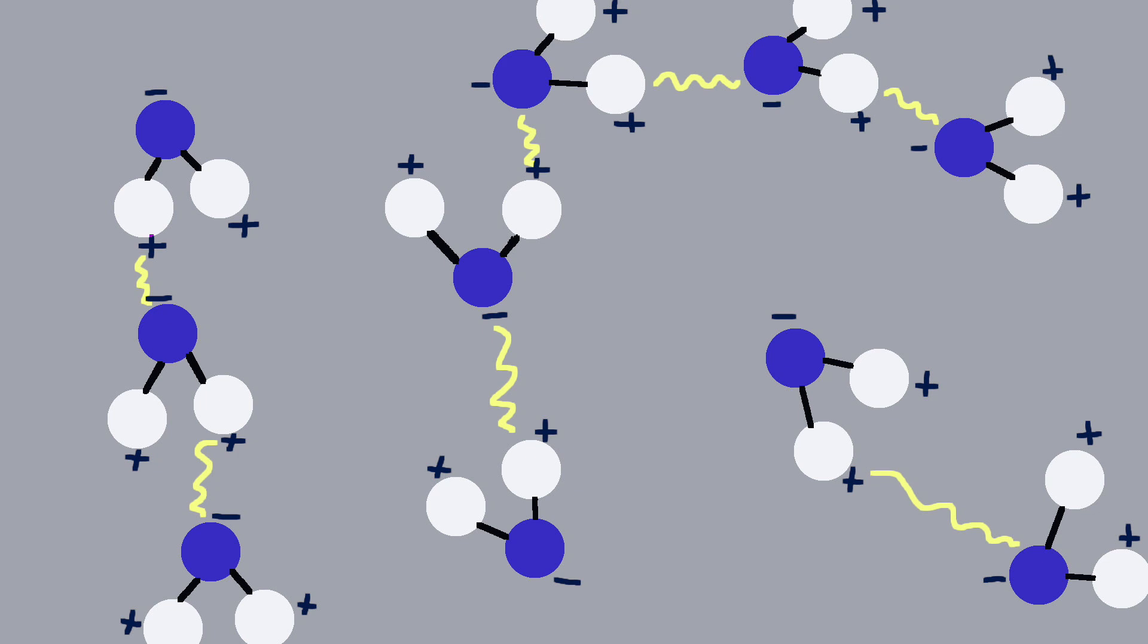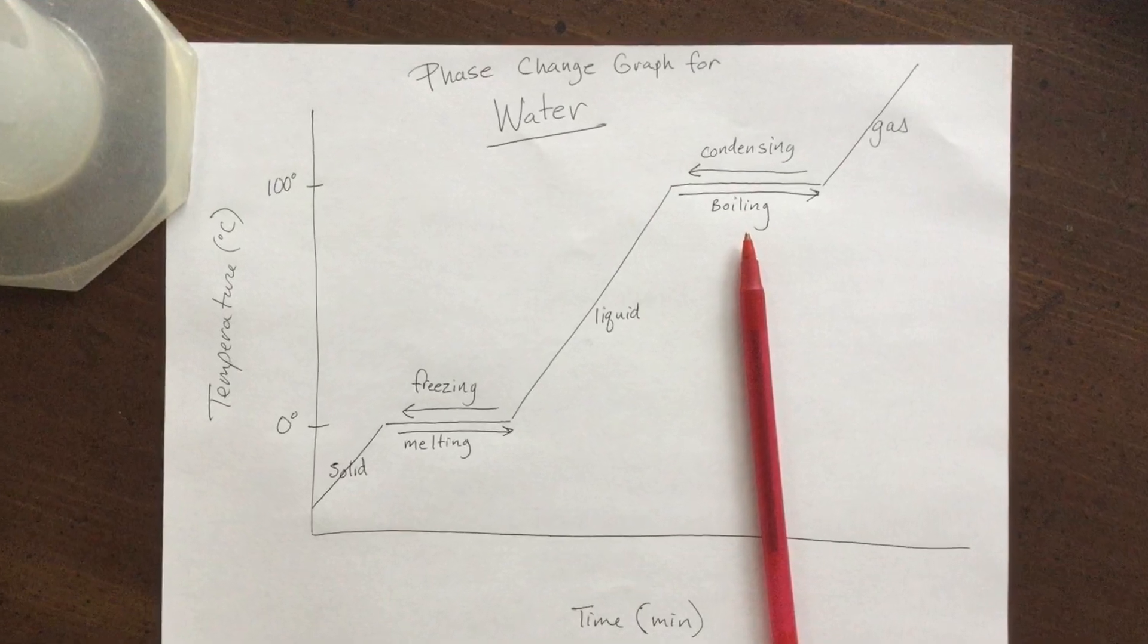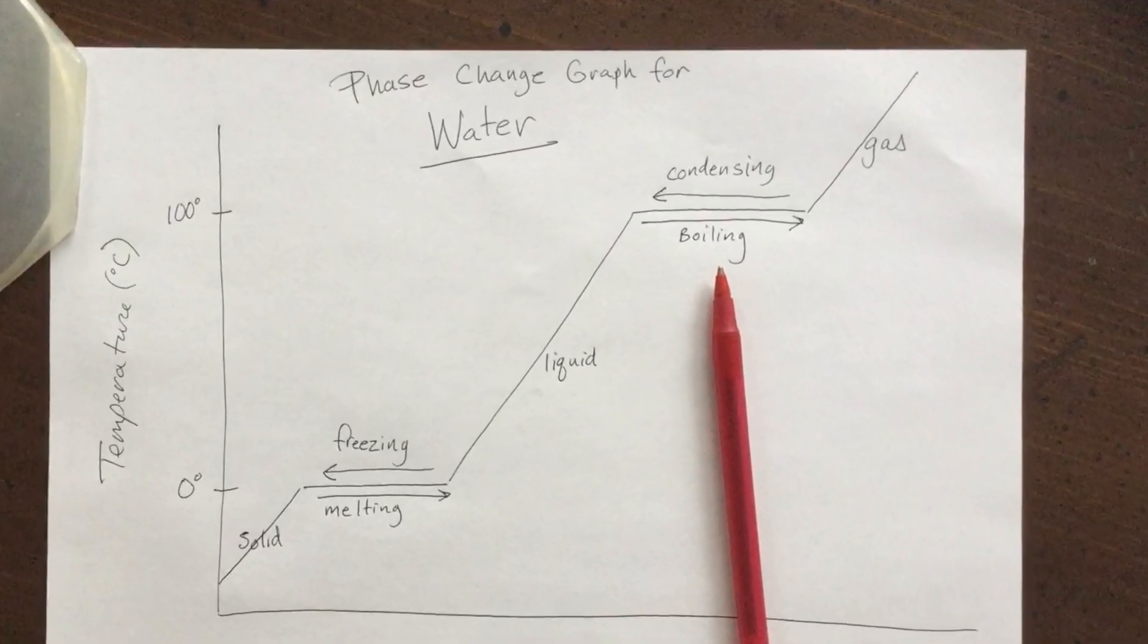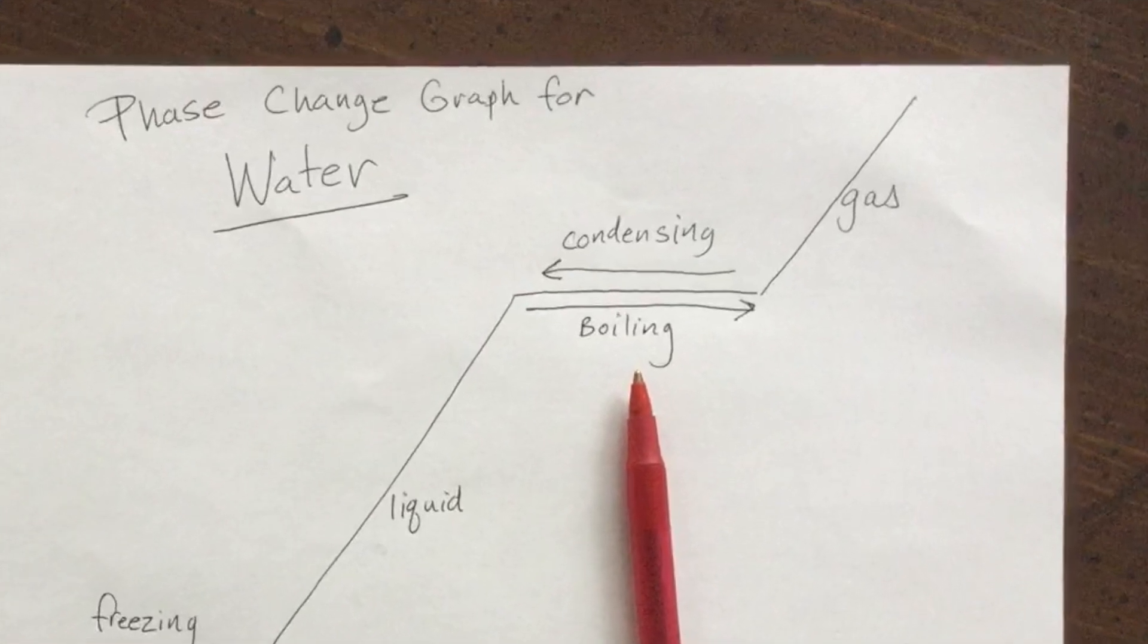This makes water want to hang out with itself and stay in the liquid phase. It's going to take a lot of energy to overcome those intermolecular forces, pull them apart and go into the gas phase. So at the flat part of the graph right here, you can see that all the energy is not being used to turn up the temperature, but to overcome the intermolecular forces, turning it from liquid into gas.